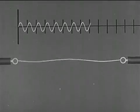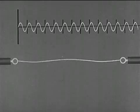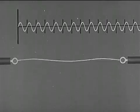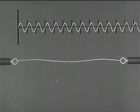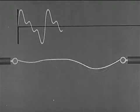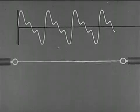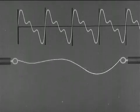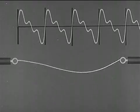When the string vibrates in three segments, it produces its second overtone, the third partial, where the frequency is three times that of the fundamental. But usually, several different modes of vibration occur simultaneously. The result is a compound waveform. Here, we represent the fundamental tone supplemented by its first and second overtones.